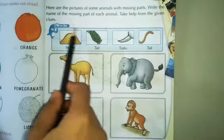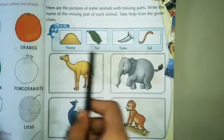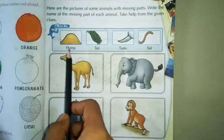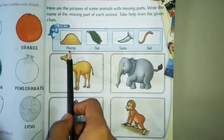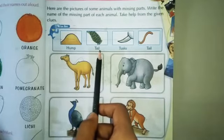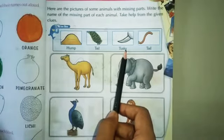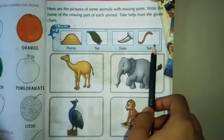We will find these missing parts from here. Now start reading these clues. H-U-M-P, hump. T-A-I-L, tail. T-U-S-K-S, tusks. T-A-I-L, tail.